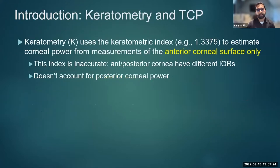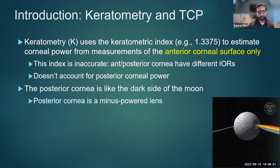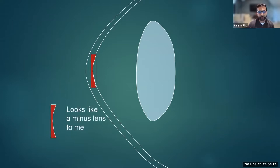Why is this so challenging? Measuring the power of the cornea in these eyes can be inaccurate. One reason is that when we do biometry, the keratometric index — an assumed index of 1.3375 — is itself false and inaccurate. The anterior versus posterior cornea have different indices of refraction, but ultimately we're taking a measurement from the anterior corneal surface only. We're not accounting for the posterior corneal power — we're assuming it has a certain power. The posterior cornea is basically like the dark side of the moon, and remember that the posterior cornea is a minus-powered lens.